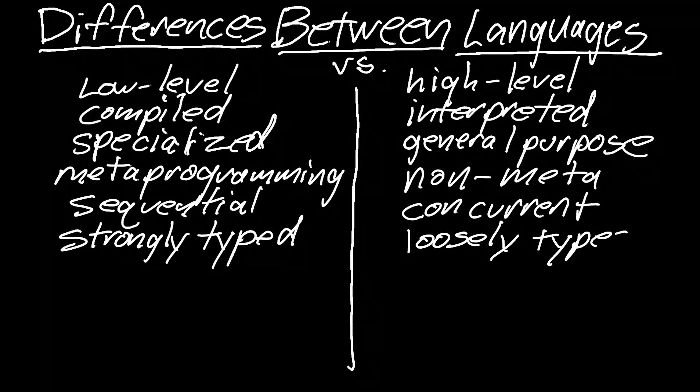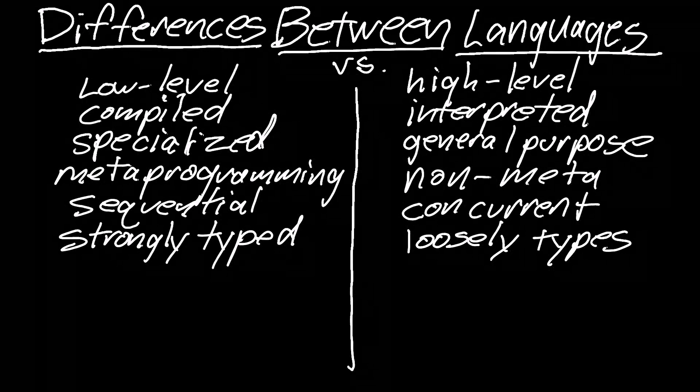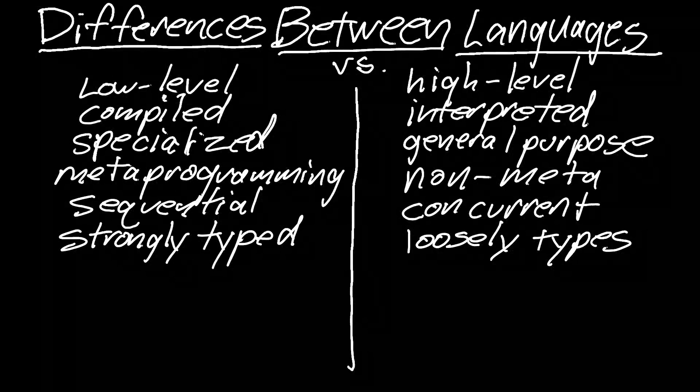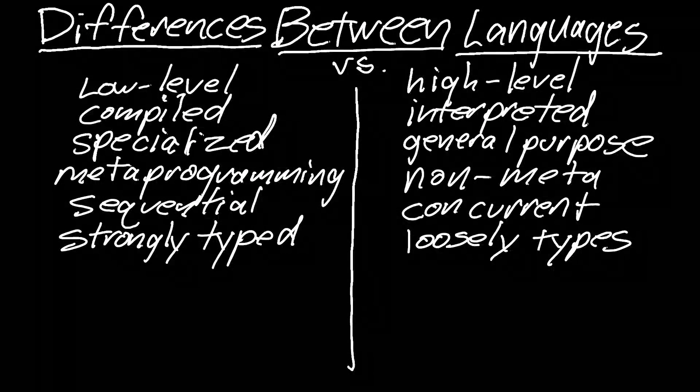Now what this means is that when you're writing your code and you're getting up to assigning a variable to a value. In the strongly typed languages, you have to say what type of variable it is, whether it's an integer or a string, what type of integer, how long the string. And in a loosely typed language, you don't even have to declare the variable. You can just start using it.